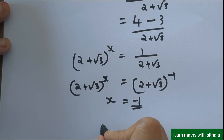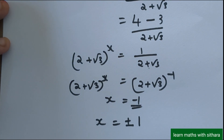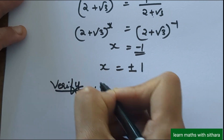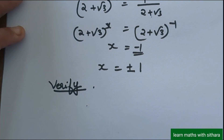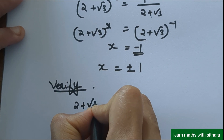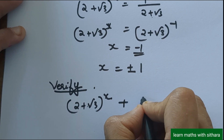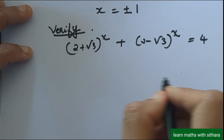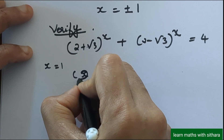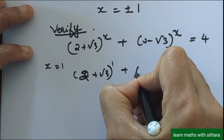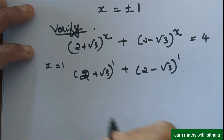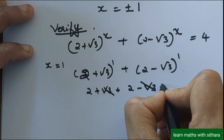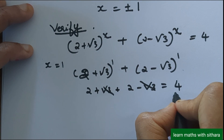We got two solutions: x = ±1. Let's verify. For x = 1: (2 + √3) raised to 1 plus (2 − √3) raised to 1 equals (2 + √3) + (2 − √3). The √3 and −√3 cancel, giving 4. So x = 1 is verified.